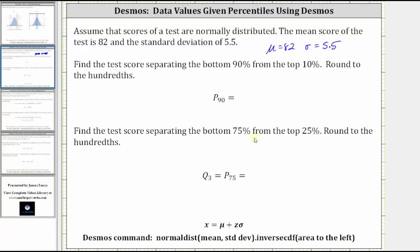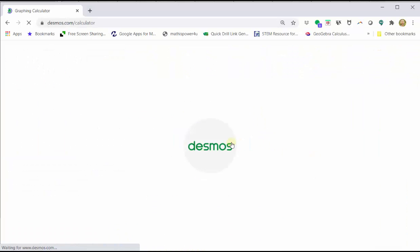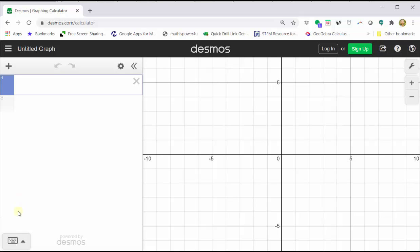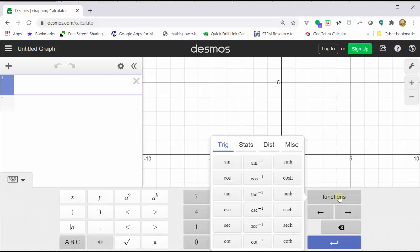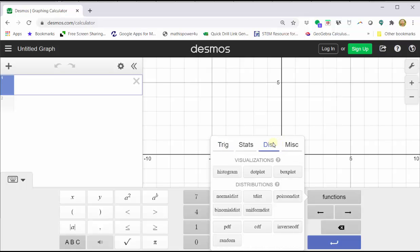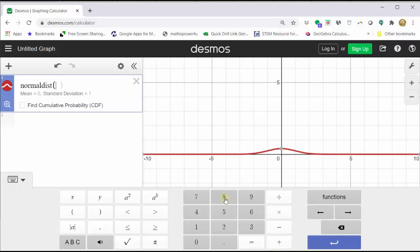To begin, let's go to Desmos.com, click graphing calculator, then click show keypad, click functions. Under the distributions menu, click normal dist for normal distribution.